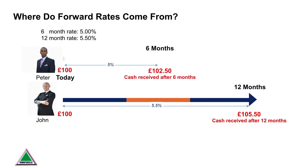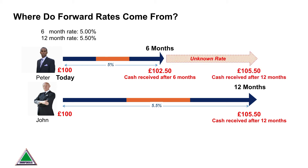Peter is going to earn 5% on his money, so he sticks it in the bank for six months. With half a year's worth of interest, his £100 will have grown to £102.50 in six months' time. What Peter wants to make sure is that for the next six months, he can earn enough interest on his £102.50 so that he also ends up with £105.50 at the end of the year. If John and Peter don't end up with the same cash, one of them's going to feel short-changed. If you know your starting cash and your final cash, you can easily work out the rate of return you should be earning. In this case, I've worked it out to be 5.85%. So if we know our six-month rate and our 12-month rate, we can imply our six-month rate in six months' time, and if you do this all the way out to 10 years, there you have a forward LIBOR curve.